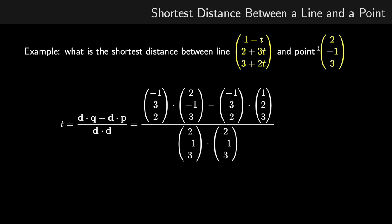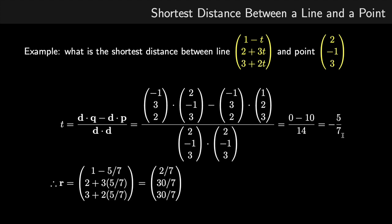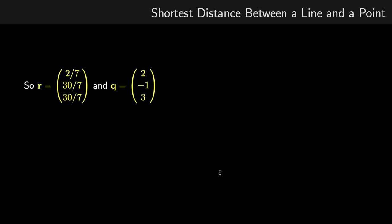That is dot producted with the position vector of point Q, subtracted by the same direction vector D dot producted with point P. The point P in this case has values one, two, and three, with D dot D on the bottom. Evaluating those dot products gives us one minus ten over fourteen, so our parameter T is minus five over seven. Substituting that into the equation of the line gives us the position vector R, which is the point closest to Q.